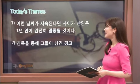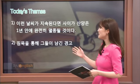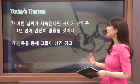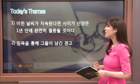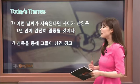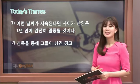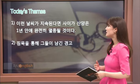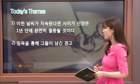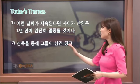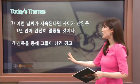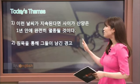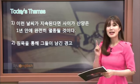Let's take a look at today's themes. The first theme is: 이런 날씨가 지속된다면 Saiga 사냥은 1년 안에 완전히 멸종될 것이다. The second sentence is: 침묵을 통해 그들이 남긴 경고. For the second theme, we'll turn it into a complete sentence. Now let's change these two sentences into English.